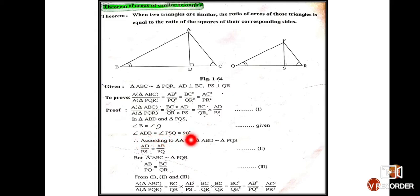Now let us go to triangle ABD and PQS and prove them similar. From the figure, angle B and angle Q are congruent. Since AD is perpendicular to BC, angle ADB is 90 degrees, and since PS is perpendicular to QR, angle PSQ is 90 degrees. So in these two triangles, angle B is congruent to angle Q and angle ADB is congruent to angle PSQ. Therefore, by the AA test of similarity, triangle ABD is similar to triangle PQS. Since the triangles are similar, their corresponding sides are proportional, giving us AD upon PS is equal to AB upon PQ. This is the second equation.